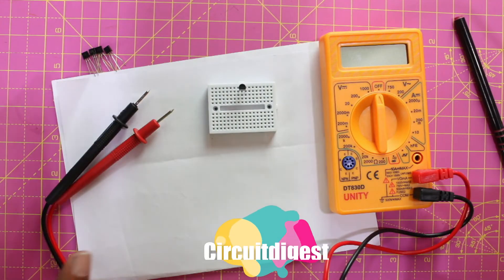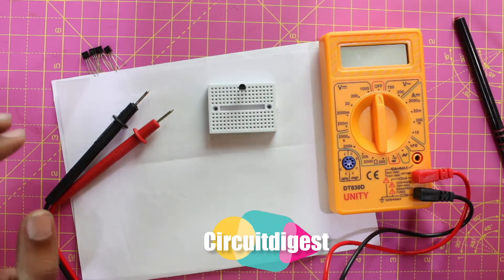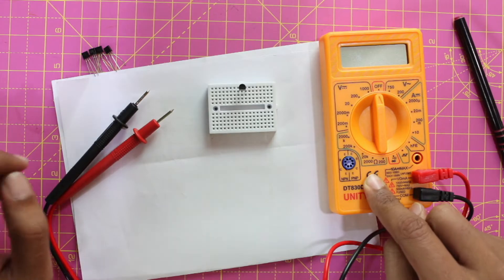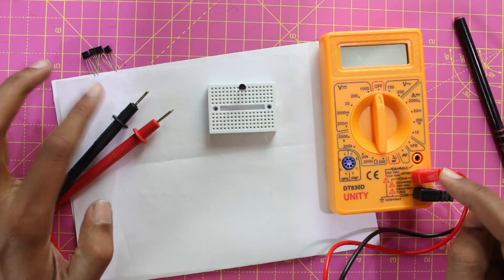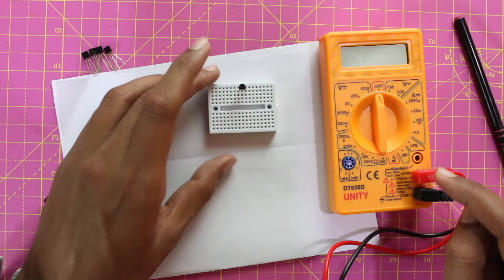Hi, this is Ashwinth from Circuit Digest, and in this video I'll show you how you can use a simple multimeter like this one to check for the collector, emitter, and base pins of your transistor.